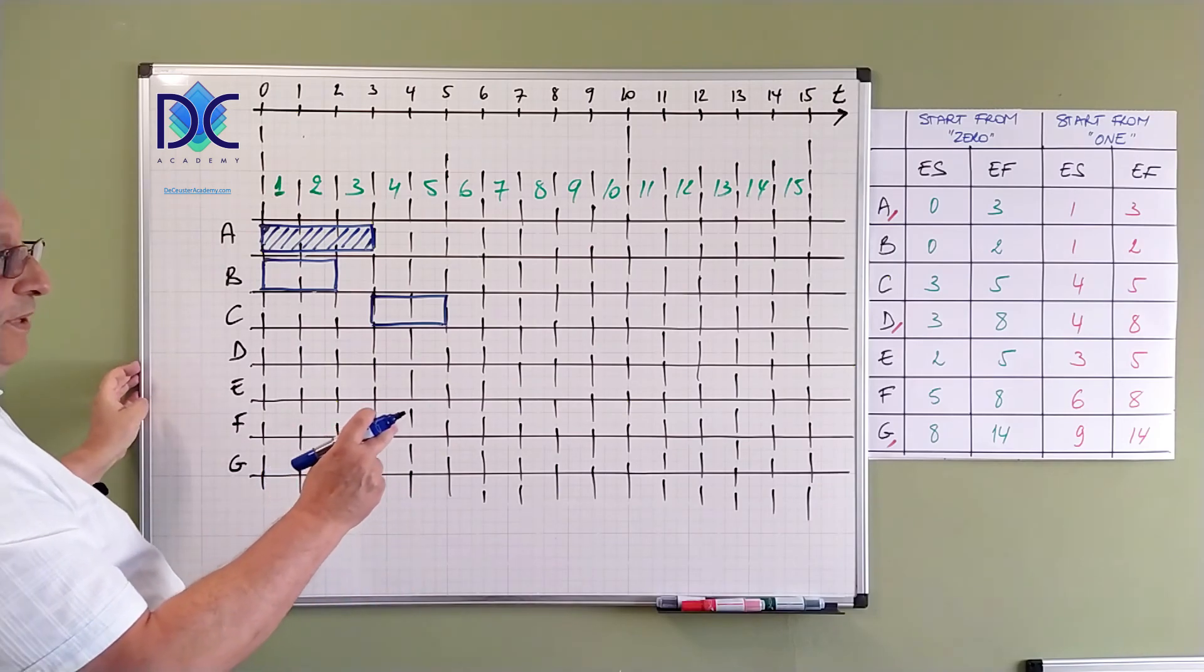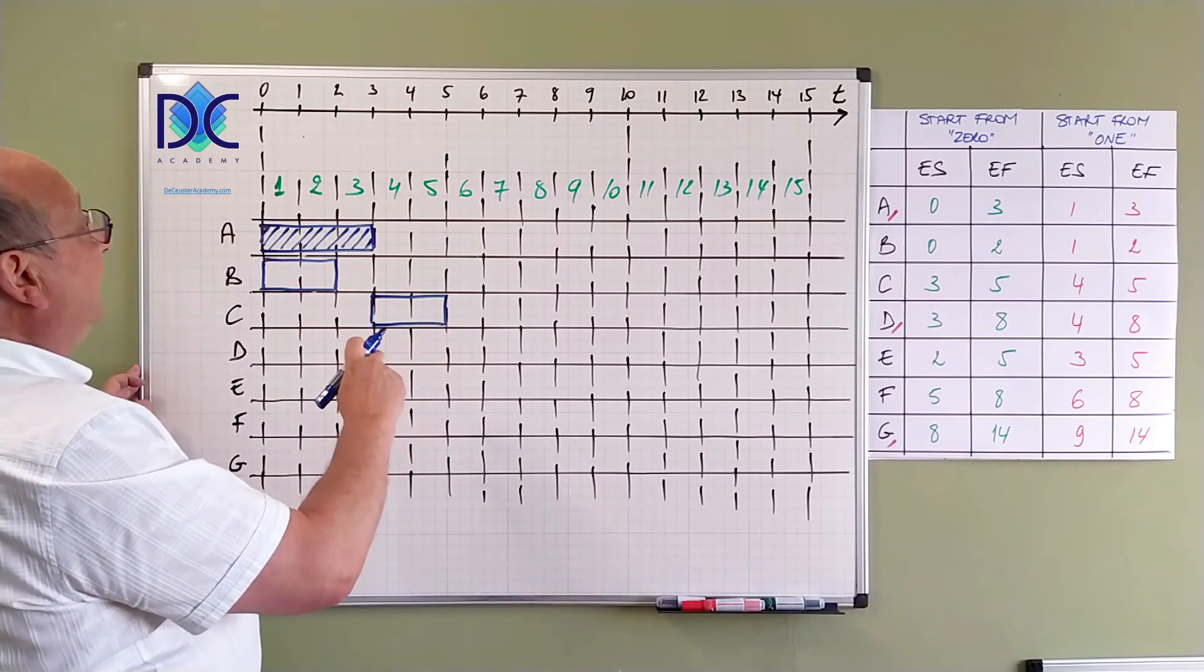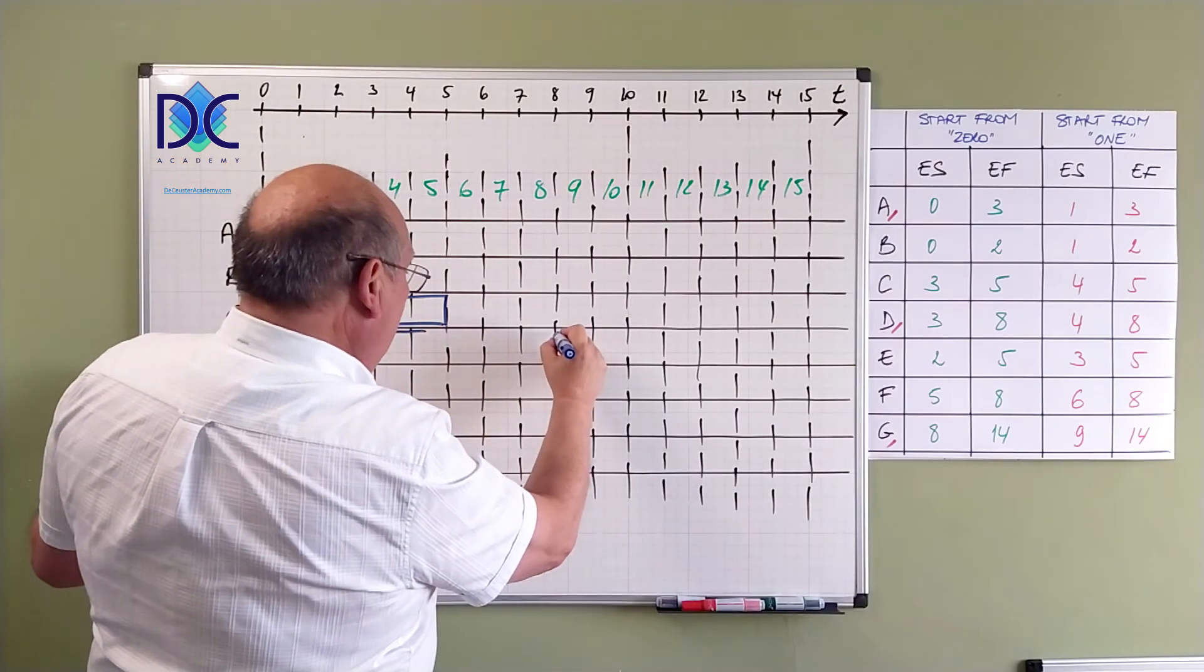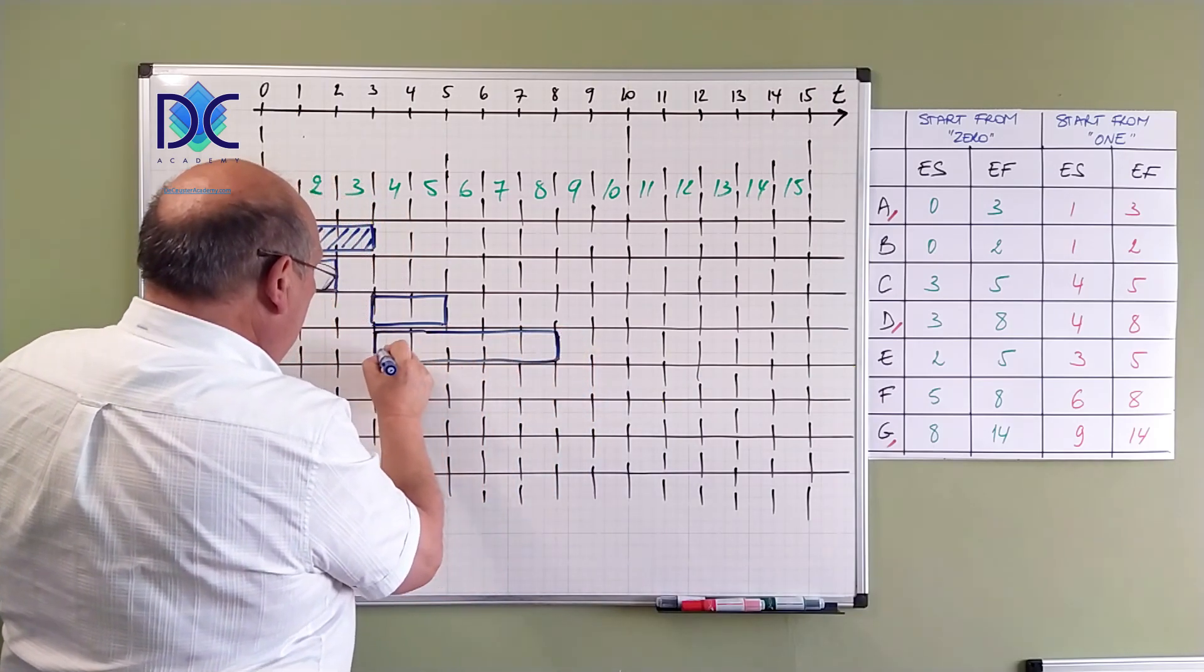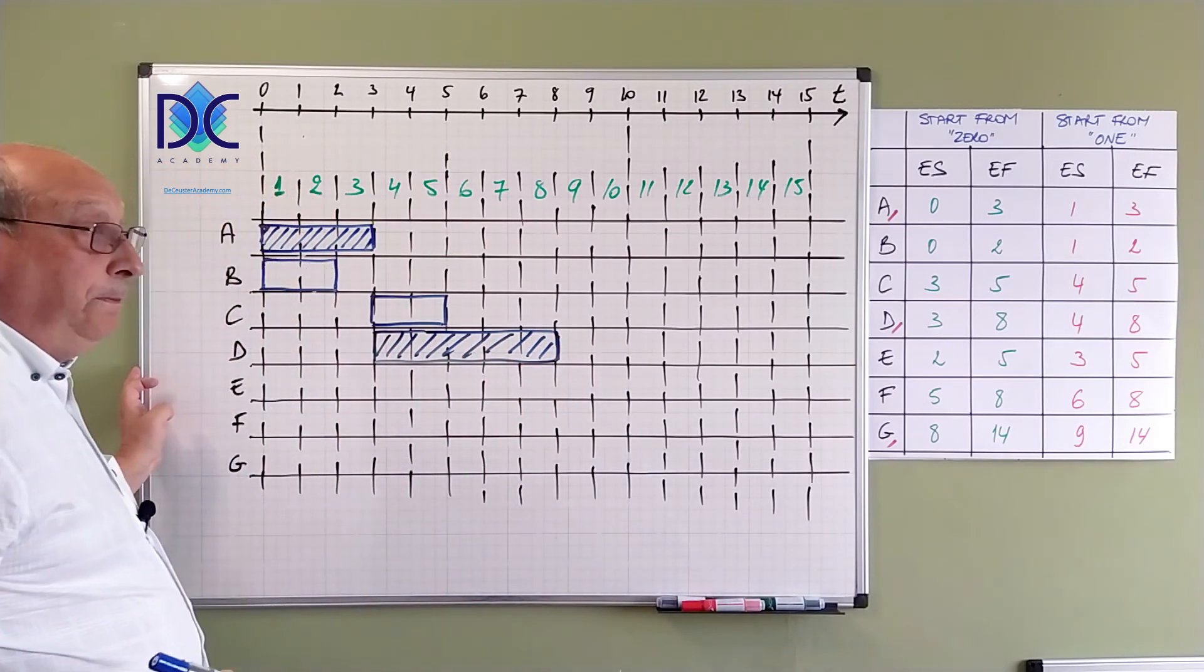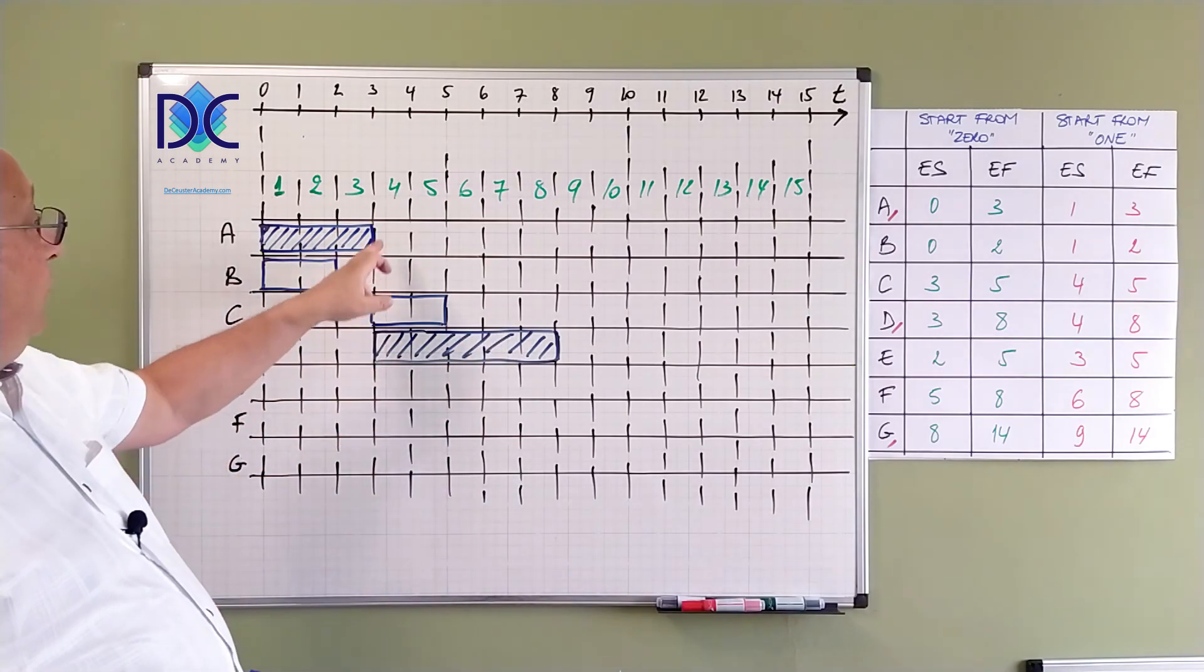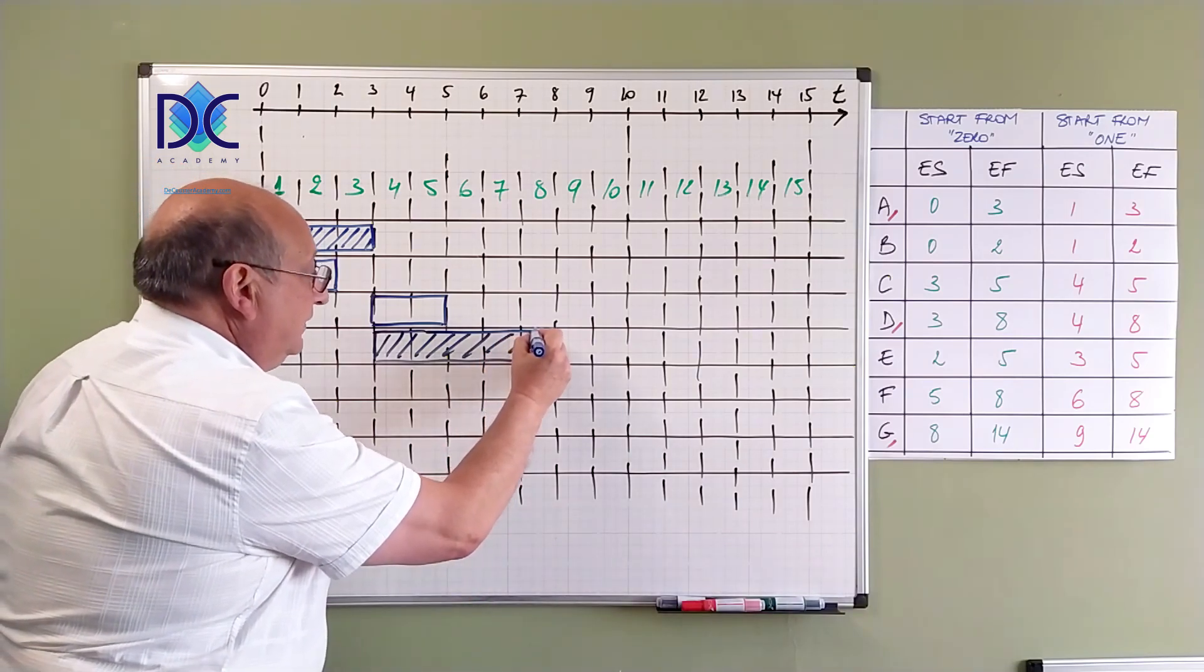D is very interesting because it's a critical path activity. We go from 3 till 8. We have again an activity on the critical path. And in the method starting from 1, we go from 4 till 8. Basically, the same result.